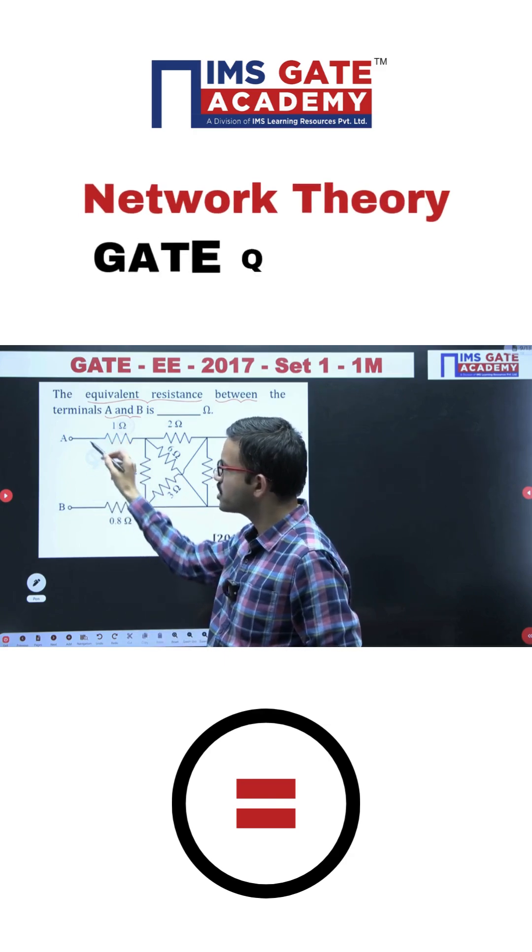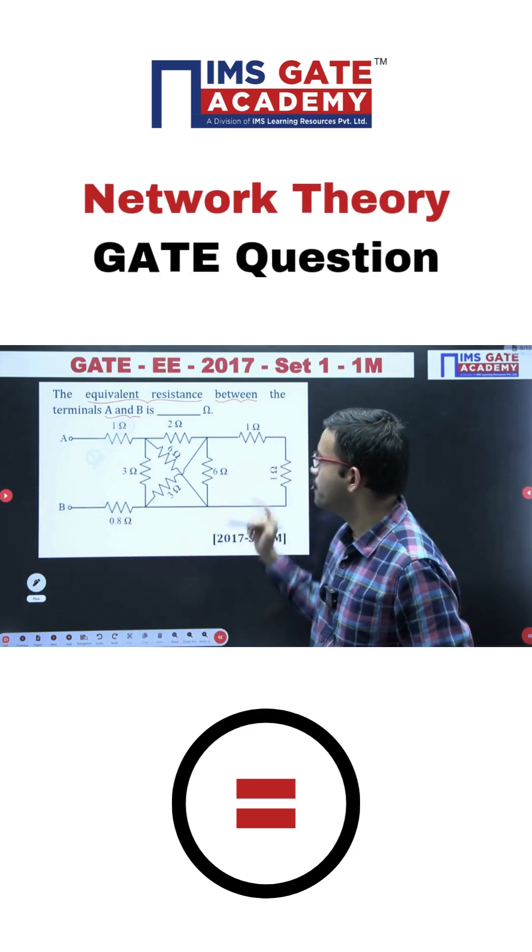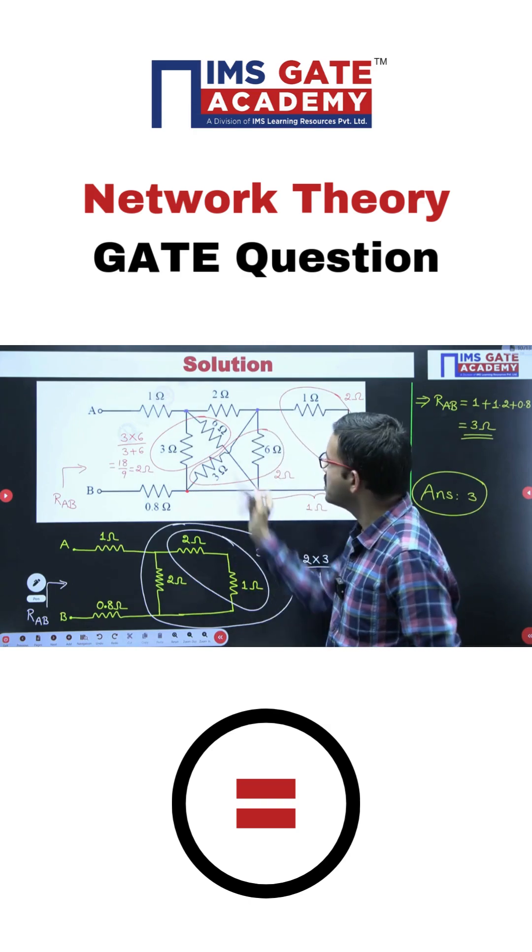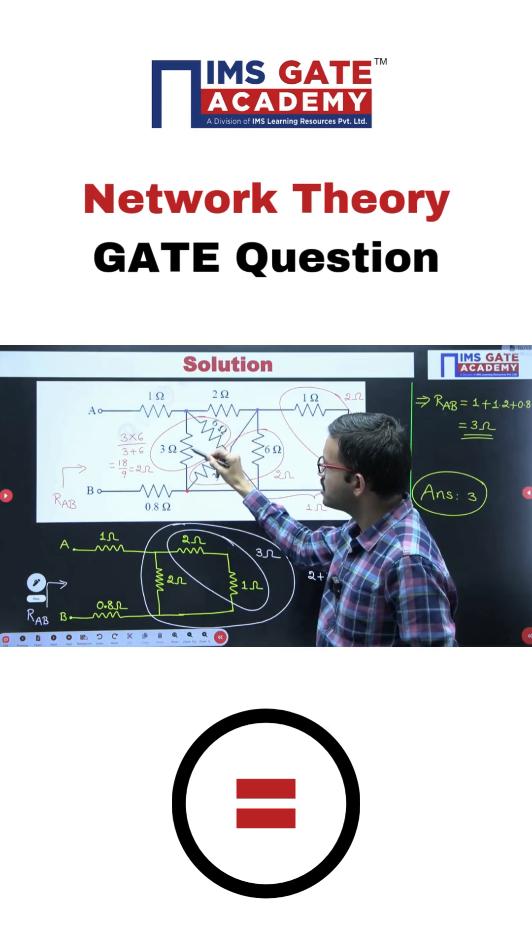We have to calculate the equivalent resistance with respect to the terminals A and B. If you observe closely this particular circuit diagram, these two points are the same. That means between these two points you have a 3 ohm resistor and a 6 ohm resistor. These two are connected in parallel.